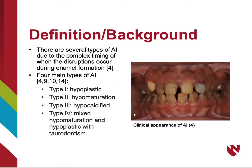There are several types of AI due to the complex timing of when the disruptions occur during enamel formation. The four main types are type 1, or hypoplastic type; type 2, or hypomaturation type; type 3, or hypocalcified type; and type 4, which is a mixture of both hypomaturation and hypoplastic type, with taurodontism present.